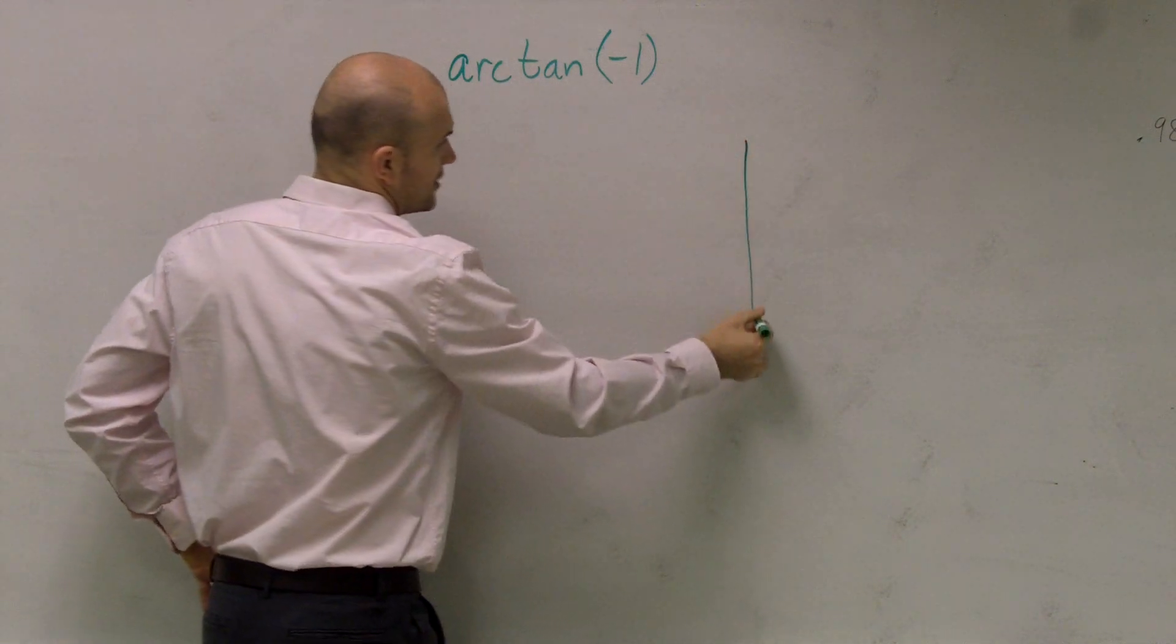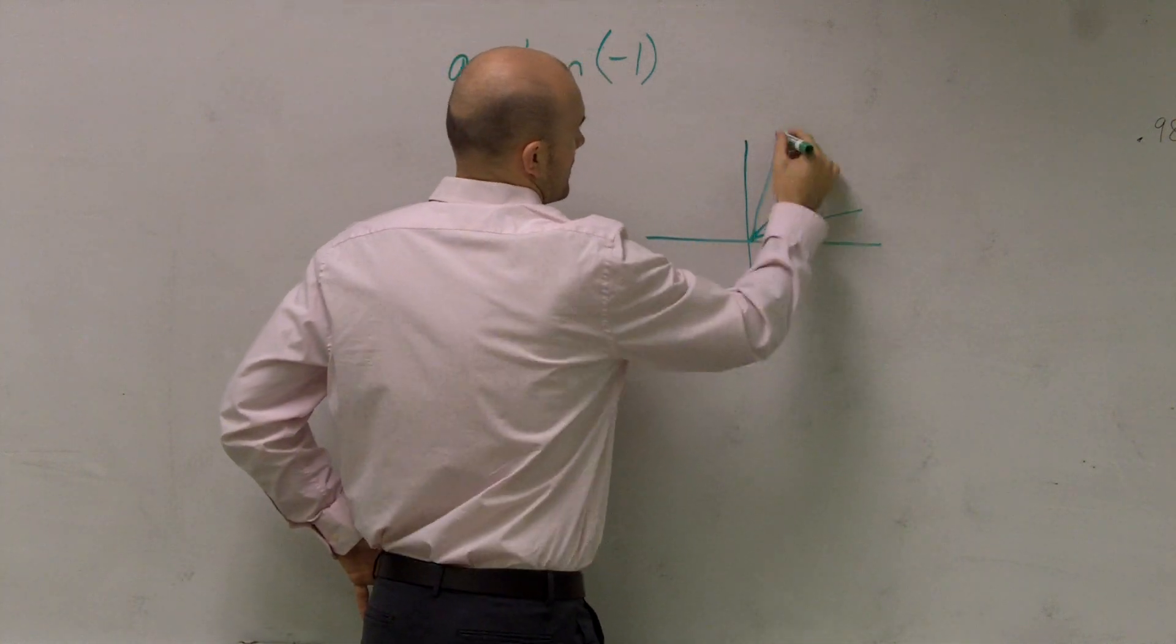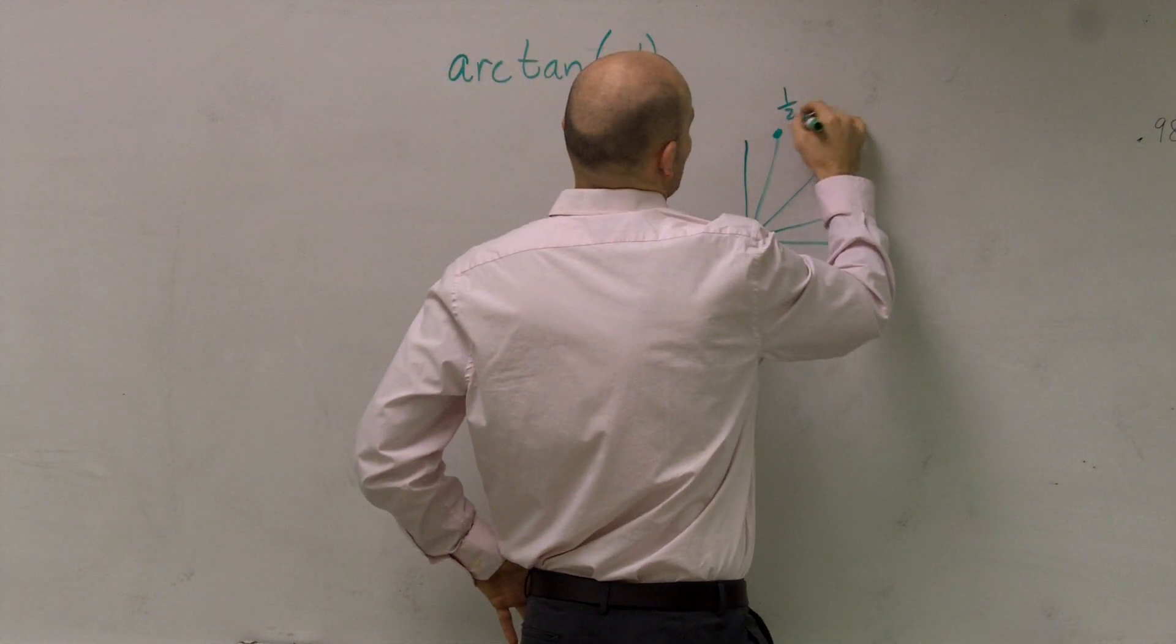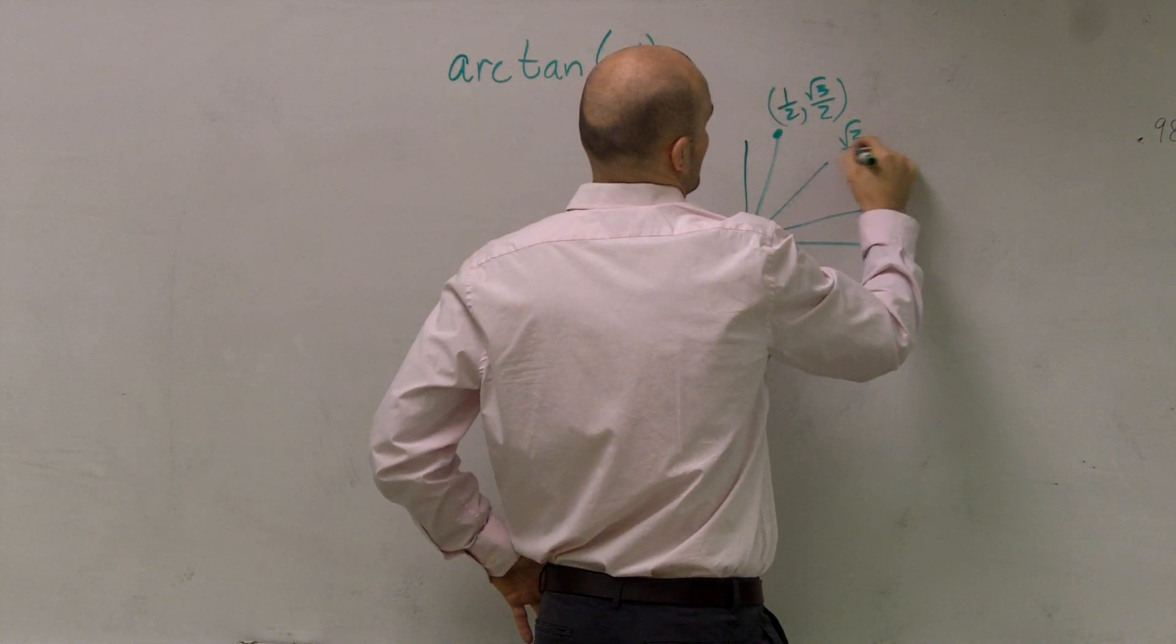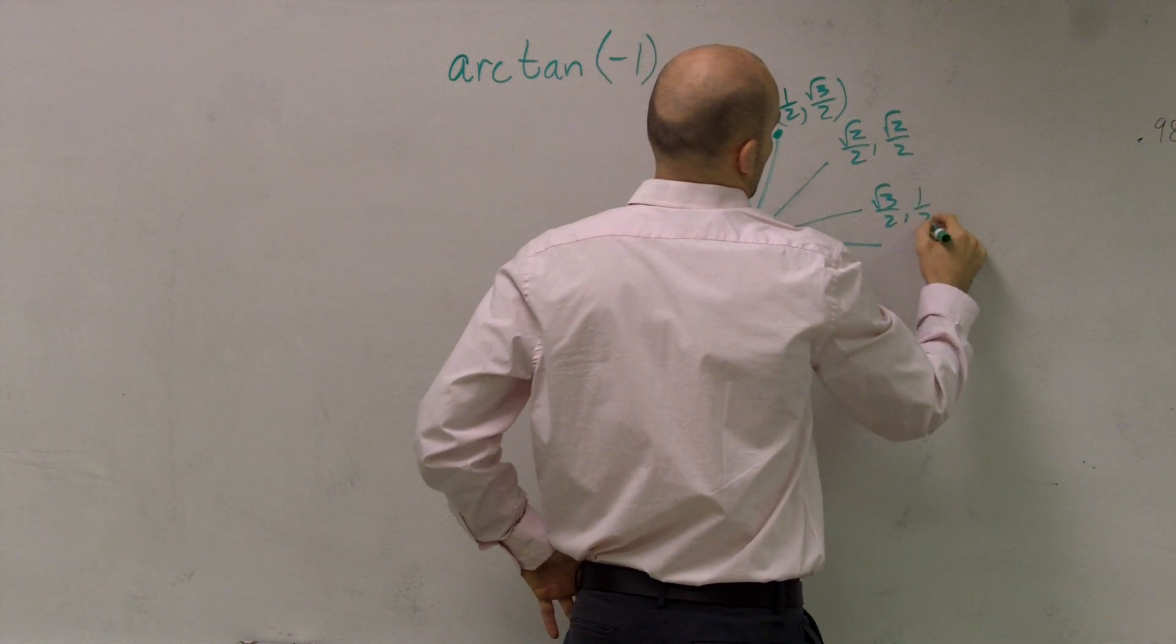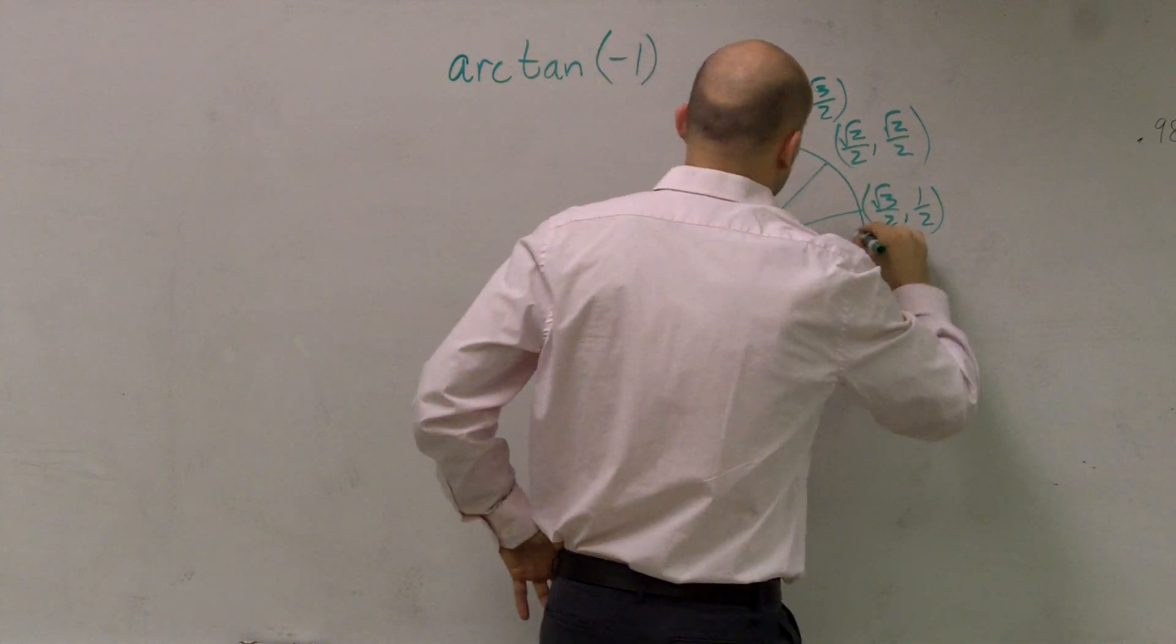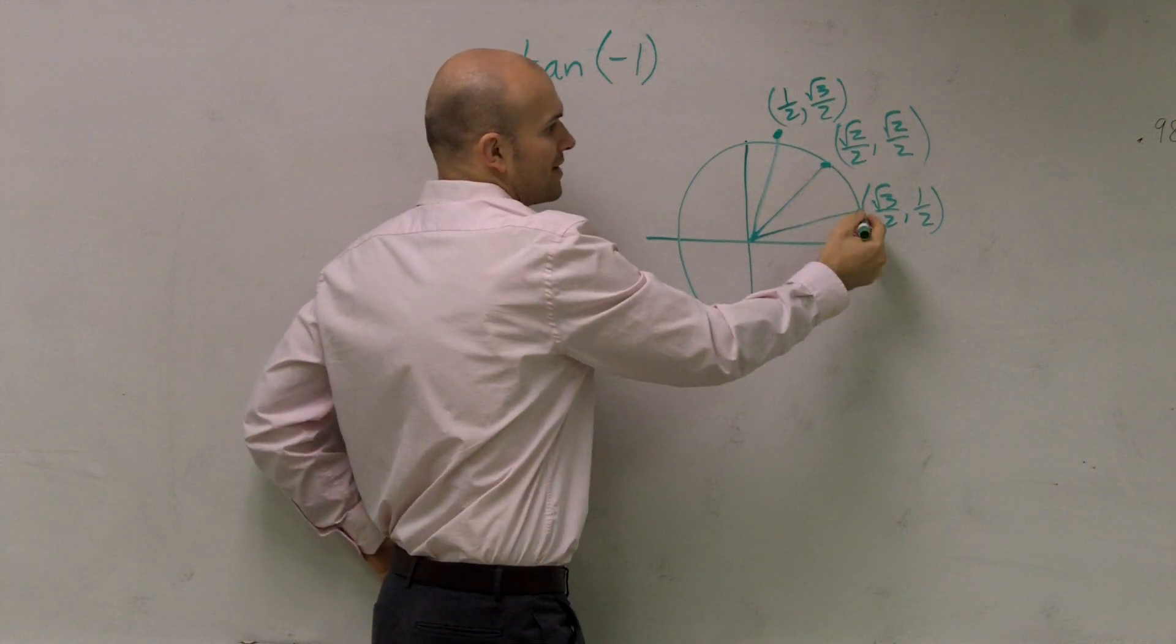Well, if we remember our unit circle, there's kind of three important angles that we've really worked with. So we have 1 half, radical 3 over 2... That's a horrible, ugly unit circle, but what I want to go through is these three points.